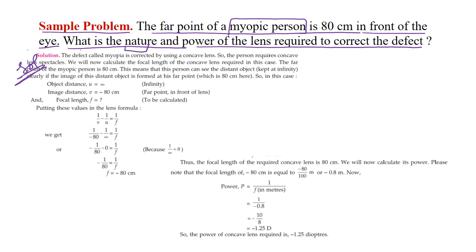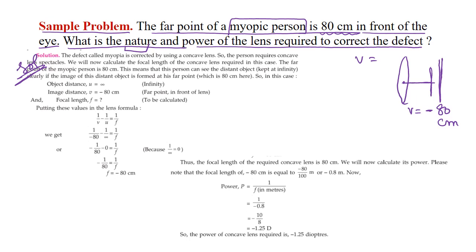Given: the far point of a myopic person is 80 cm in front of the eye. The image distance v is minus 80 cm (negative because the image forms on the same side as the object, in front of the lens). The object distance u is infinity, since we are correcting for distant objects.